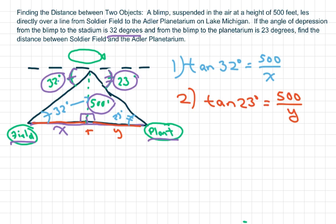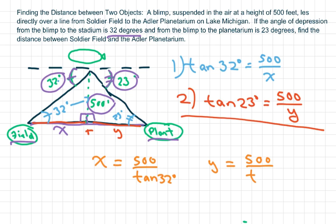Now let's solve for X and Y. So we have, here's orange, X equals 500 over tan of 32 degrees. And Y equals 500 over tan of 23 degrees.